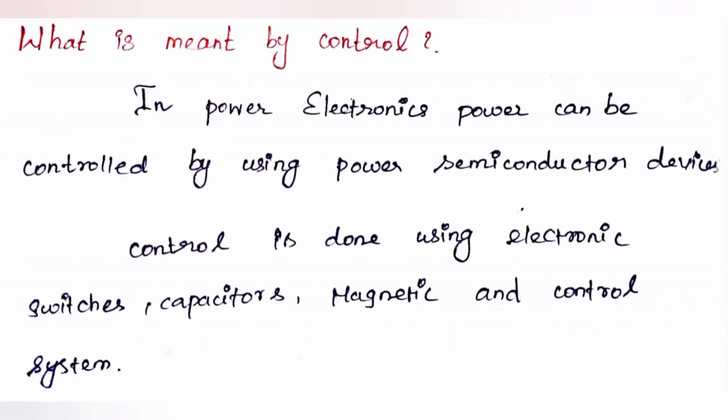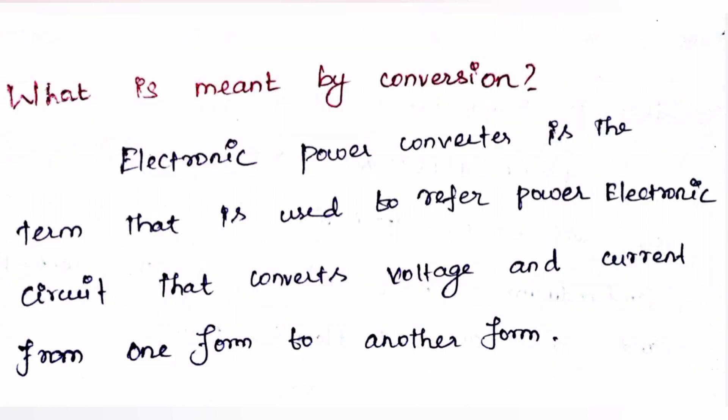What is meant by control? Power can be controlled by using electronic switches, capacitors, magnetics, and control systems. What is meant by conversion? Electronic power converter is a term used to refer to power electronic circuits that convert voltage and current from one form to another form.